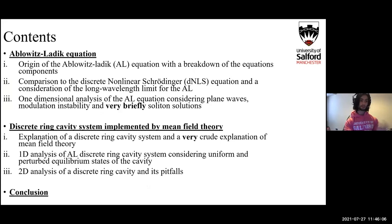Just a quick breakdown of the contents then. The first part is purely going to be to do with the Ablowitz-Ladik equation. We're going to talk about its origin, its components, and compare it to the discrete nonlinear Schrödinger equation, another commonly used equation within optics. Then we're going to look at the Ablowitz-Ladik's long wavelength limit and some 1D analysis looking at different kinds of trial solutions. Then we're going to focus on implementing a discrete ring cavity system into the Ablowitz-Ladik equation, which will be done via mean field theory, and then look at some analysis with this in one and two spatial dimensions, followed by some very brief conclusions.